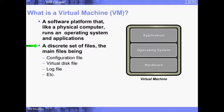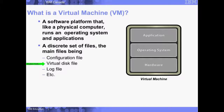A virtual machine is a discrete set of files — the main ones being the config file, the virtual disk file, and log files, among others. In the Install, Configure, and Manage course, we go through all the files that make up a virtual machine. The main file is the virtual disk file, which can be fairly large — if you give a VM a 100 GB virtual disk, that file is generally around 100 GB in size. But it can be smaller using thin provisioning, which we talk about in class. Treat your virtual machine just like a real computer.